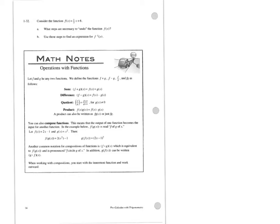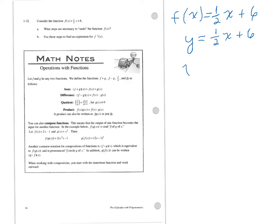When we're talking about inverse functions, you'll see the function listed there: F of X is equal to one-half X plus 6. Remember, as we're creating a table of points to graph this line, we'll more likely refer to it as Y equals one-half X plus 6. The question for part A is: what are the steps necessary to undo the function? In other words, what is the inverse? The most straightforward way is to rewrite the equation, swap the variables, and then solve for Y.